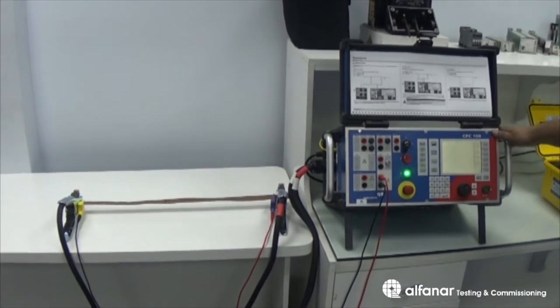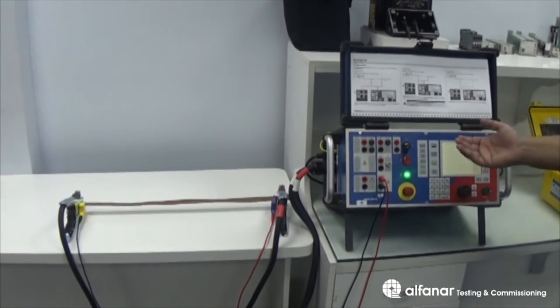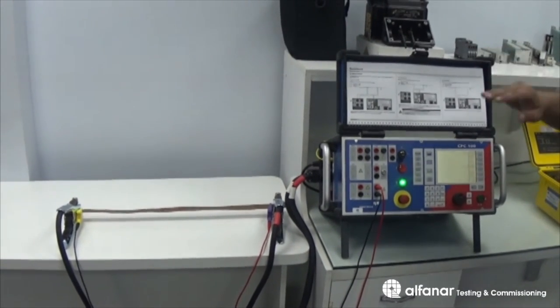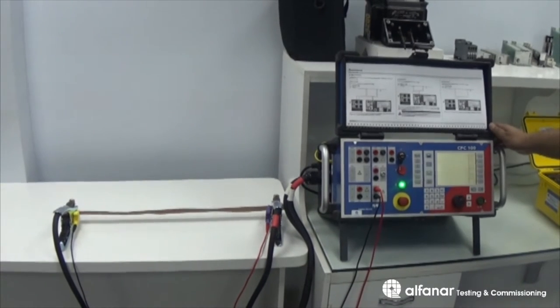The contact resistance is measured by injecting DC current and measuring the DC voltage drop across it. Then, by dividing the voltage drop over the injected current, we will get the DC contact resistance.